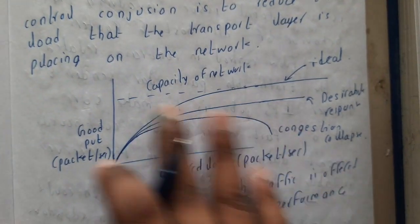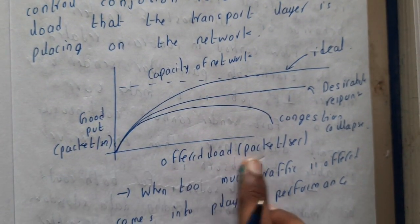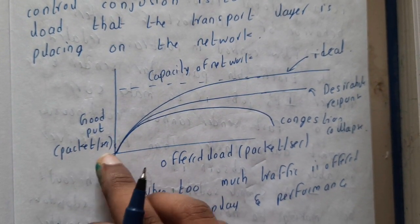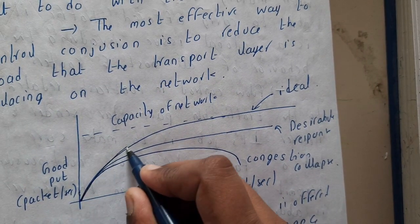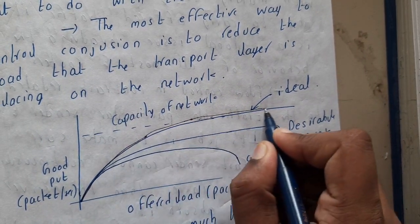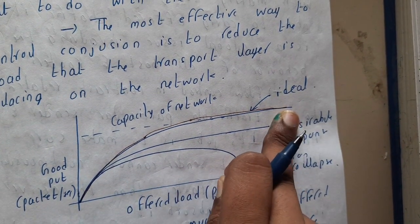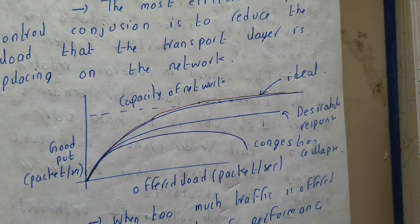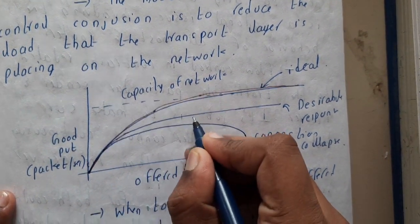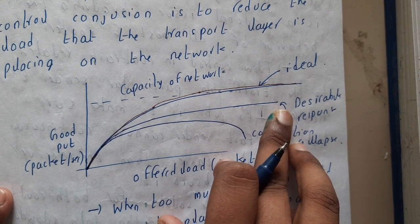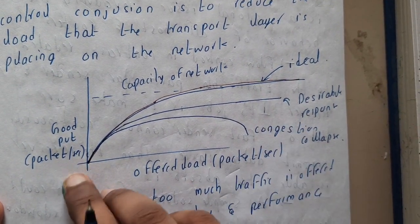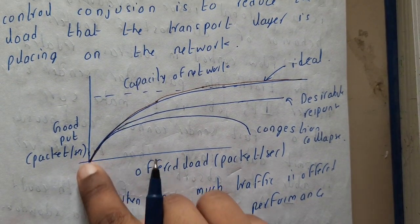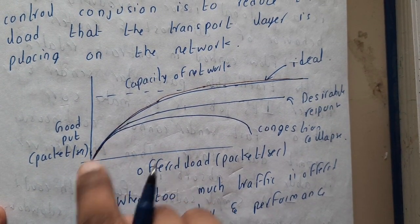If we draw a small graph — where the axes represent speed in packets per second — a good system would look like this. Ideally, we think a system should work in a certain way up to the maximum capacity of the network. This is the desired response: how fast data should transfer without congestion, in a normal scenario.